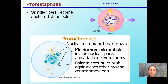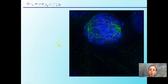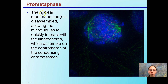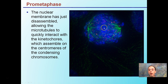Pro-metaphase is in between prophase and metaphase. The spindle fibers anchor at the poles, the nuclear membrane fully breaks down, and kinetochore microtubules invade the nuclear space. These kinetochores start attaching to the chromosomes, getting them organized now that the nucleus is broken apart. Because our nucleus is breaking apart, these fibers grab onto the chromosomes to hold them and align them during cell division.